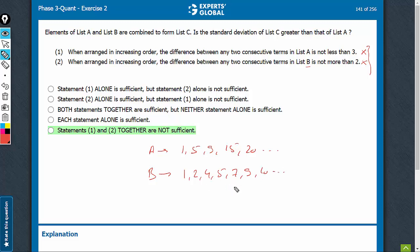Difference between any two consecutive terms is not more than two, and one would think that on combining, the resultant list would have terms a bit nearby because of the terms in list B, and therefore, resultant list C will have lower standard deviation. Yes, in this case, but imagine a scenario such as this,